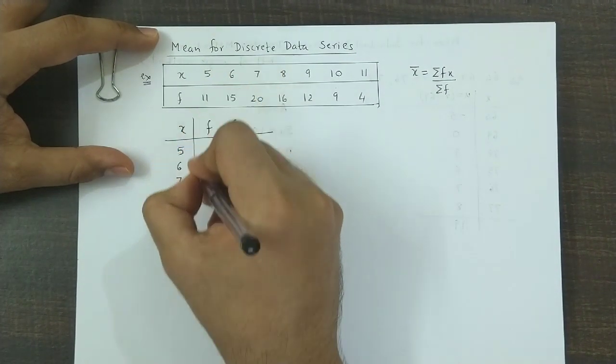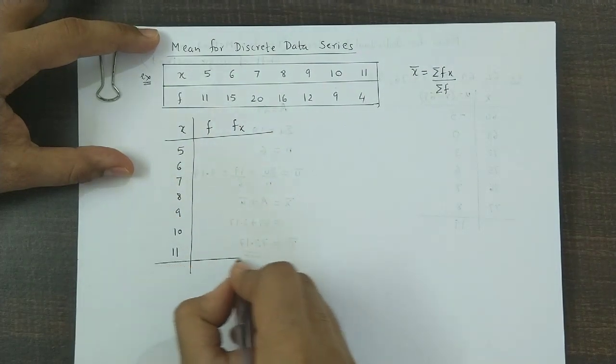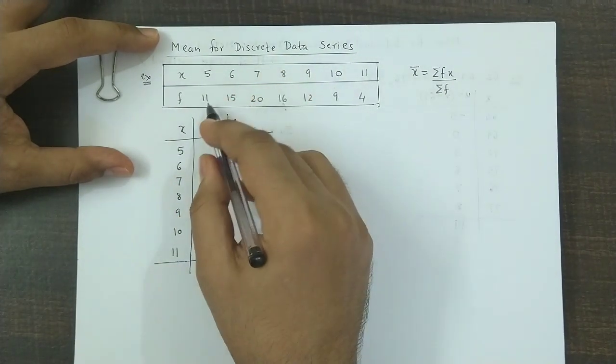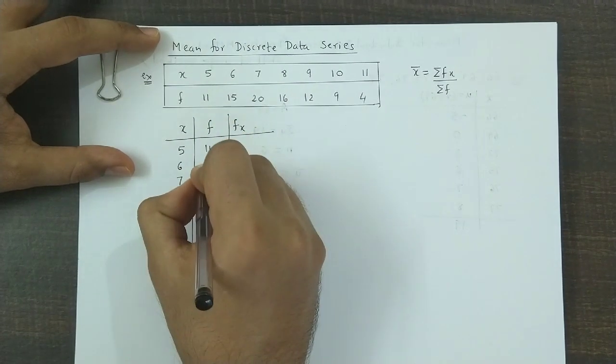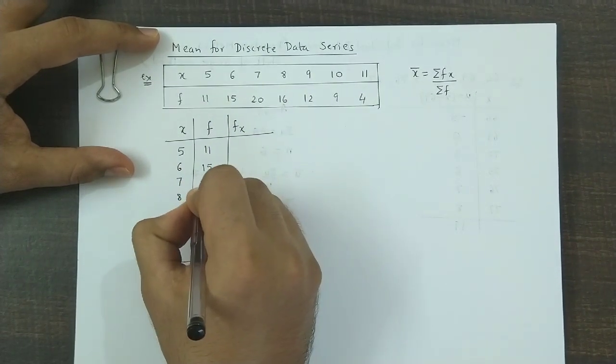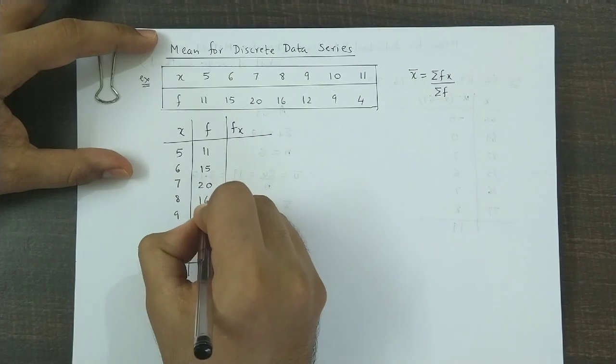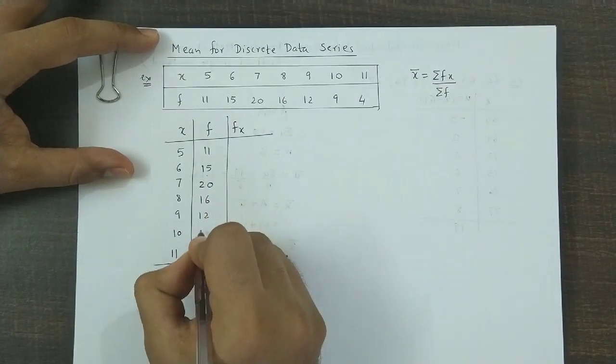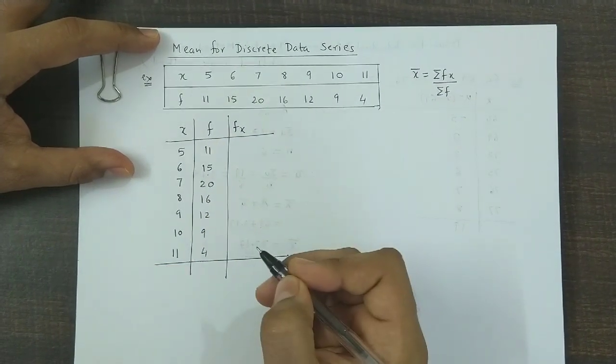Next we would write down the frequencies. The frequencies are 11, 15, 20, 16, 12, 9, and 4.